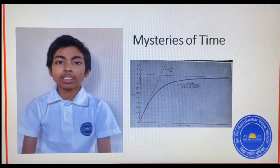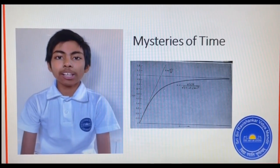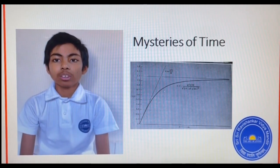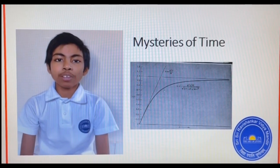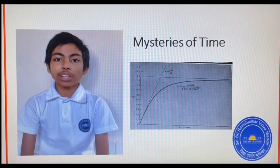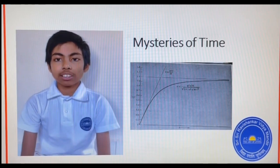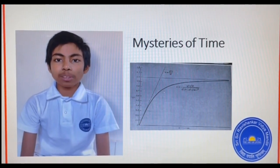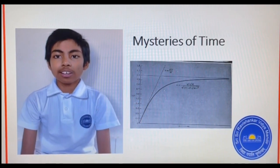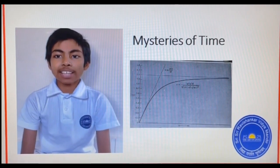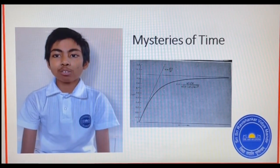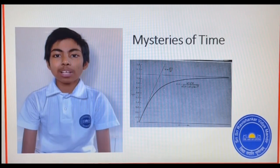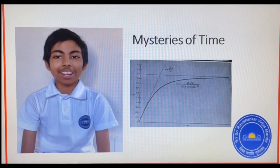Time is not the only variable which has an arrow. The entropy of the universe is also increasing — it is a measure of the randomness of the universe. Life is anti-entropic, which changes randomness into structure and pattern.